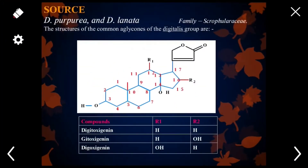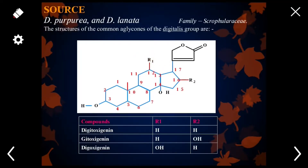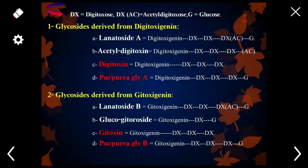This is the aglycone portion, and you can see here there is R1 and R2. You can make three different kinds of aglycones, which are present in different steroidal glycosides in digitalis. If you want to make digitoxigenin, you replace R1 and R2 with hydrogen atoms. If you want to make gitaloxigenin, you replace R1 with hydrogen and R2 with a hydroxyl group. In this way, you can learn how to make the aglycone portion of steroidal glycosides in digitalis.